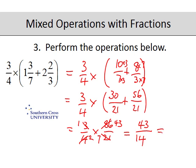Now writing that back as a mixed number, fourteen goes into forty-three three whole times. And what are three fourteens? That's forty-two so there's one left over. So it's three and one fourteenth.